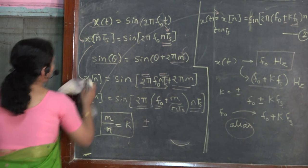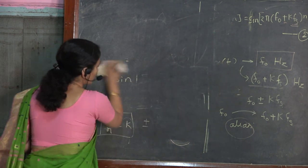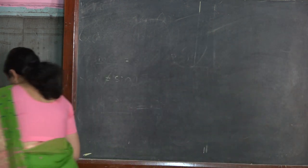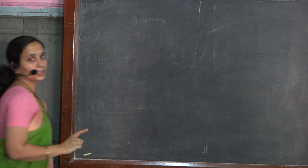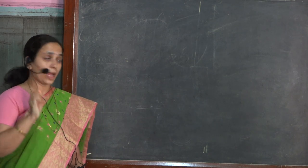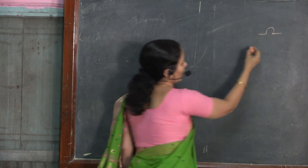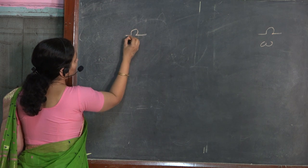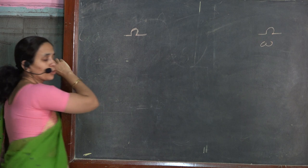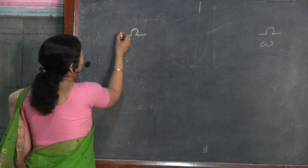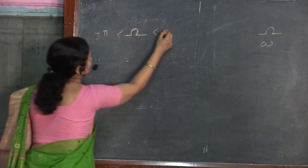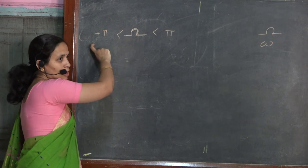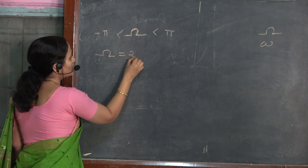To discuss that concept, let us concentrate on the frequency relation. The angular frequency of the analog signal is represented by Ω, while the angular frequency of the digital signal is represented by ω. As shared in the Fourier transform videos, the analog frequency lies in the range minus π to π. This is universally proven: the angular frequency has a range from minus π to plus π. At the same time, we know that Ω equals 2πf.